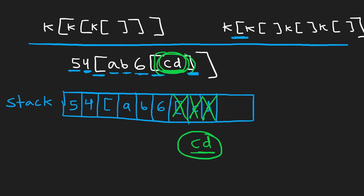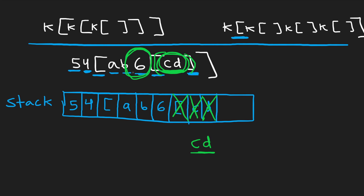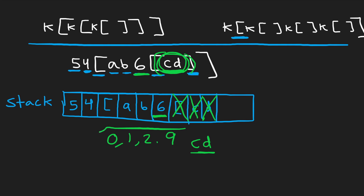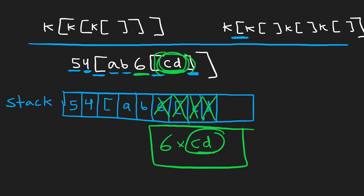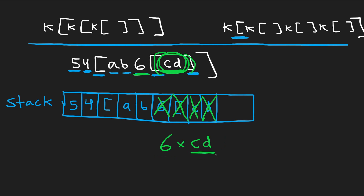Now we want to get the integer that preceded those brackets. It could be a single digit like 6, or even a double digit like 54. We keep popping characters from the top of the stack while the character is a digit. In this case we pop just a single 6 because the next character is lowercase b, which is not a digit. So we get 6 multiplied by 'cd', and we take 'cd' and add it to the stack six times.